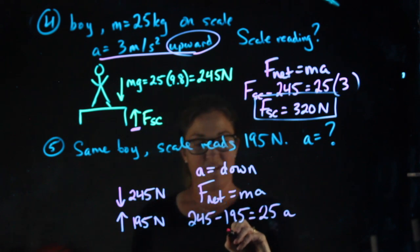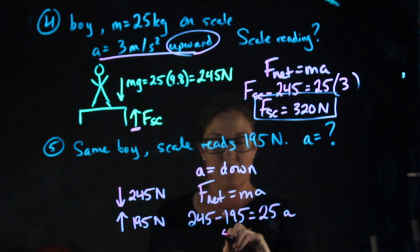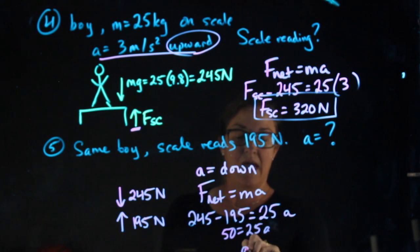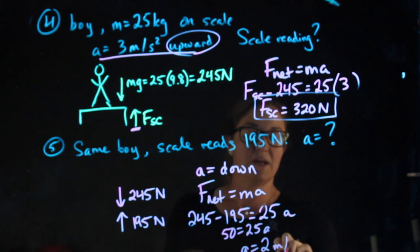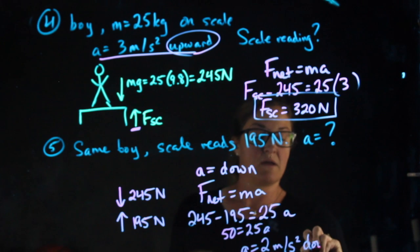245 minus 195 is 50, and the acceleration is 2 meters per second squared downward.